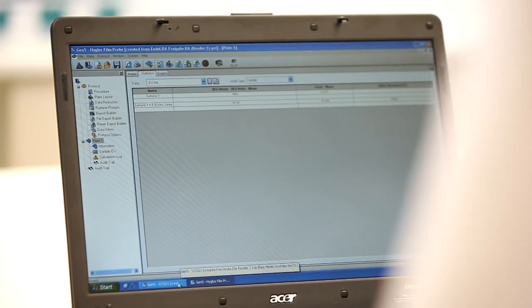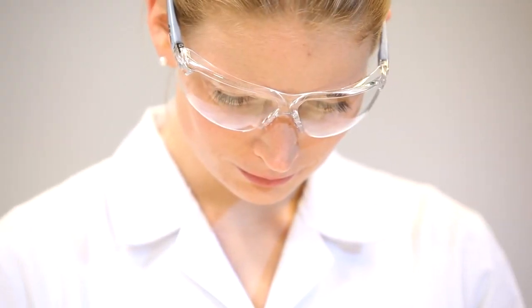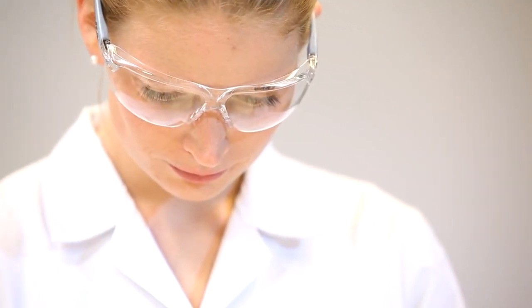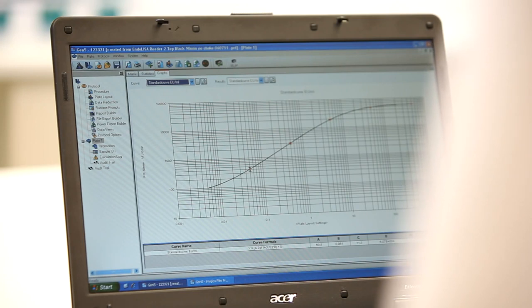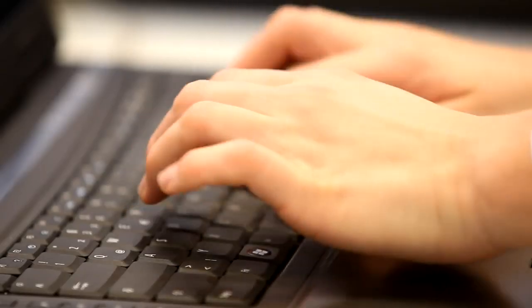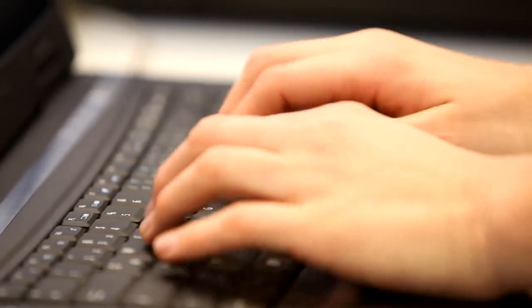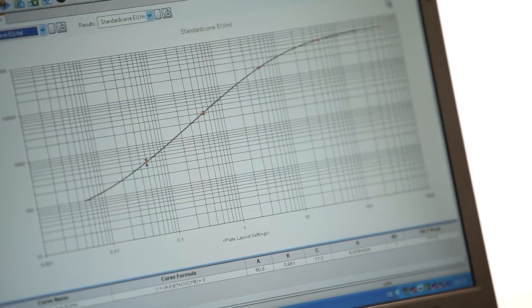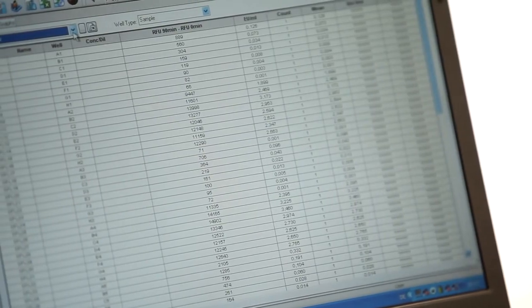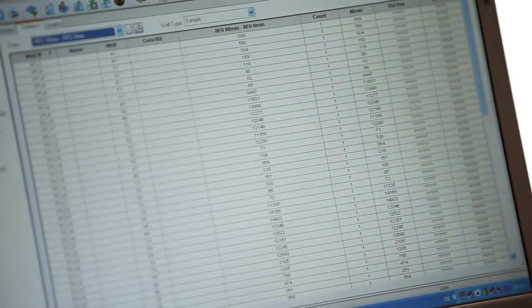Subtract the time point zero values from the end point values. Using calculation software such as Gen5, the endotoxin concentration is determined by standard curve analysis. A four-parameter logistic function is recommended for modeling the Endolysa standard curve. Alternatively, a linear model can be used. Finally, the endotoxin concentrations in EU per milliliter are obtained, ready for interpretation and reporting.